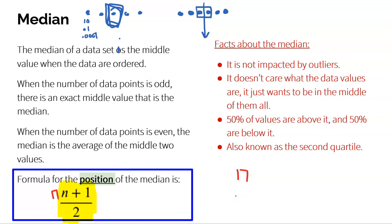The ninth value could be 22, could be 167, could be 1,000 — but it's just the ninth value once they're in order. If we have 20 pieces of data, put them in order low to high, then N equals 20. 20 plus 1 is 21, divided by 2 is 10.5. So the median is located right between the 10th and the 11th value — that's where 10.5 would fall. You take the 10th value and the 11th value, average them together, and the median is right in between.